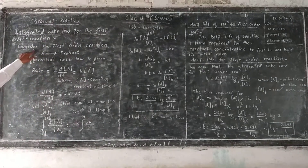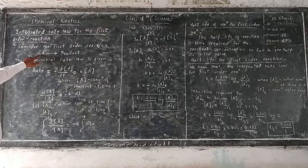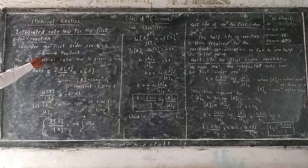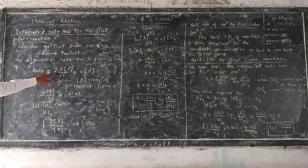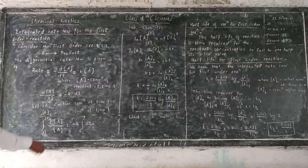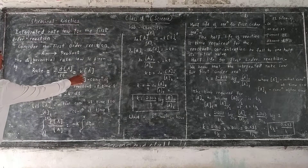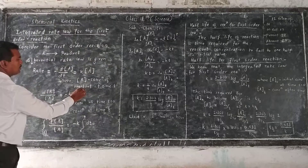Consider this reaction where reactant A produces a product. The differential rate law for this equation is: rate of reaction is directly proportional to concentration of A. As the product forms, the concentration of reactant is consumed, so a negative sign is taken. Therefore, rate of reaction equals minus d[A]/dt, which equals K times [A], where [A] is the concentration of reactant at time t.